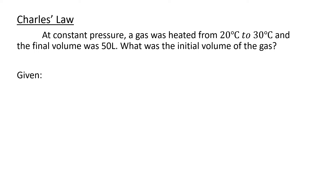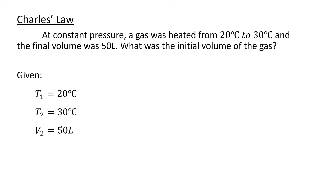Let us solve a problem involving Charles' Law. At constant pressure, a gas was heated from 20°C to 30°C, and the final volume was 50 liters. What was the initial volume? The temperature increased, so based on Charles' Law, the volume also increased. That means the final volume of 50 liters is greater than the initial volume — our answer should be less than 50 liters.